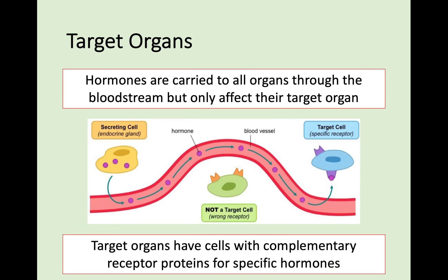Hormones are carried to all organs through the bloodstream, but they would only affect their target organ — something that should remind you a little bit of how enzymes work in terms of being specific. Target organs have cells with complementary receptor proteins, meaning they can only fit with the specific hormone. So if you have a secreting cell like an endocrine gland releasing a hormone into the bloodstream, it will pass over target cells waiting for another type of hormone and won't match. It will find the correct target cells on the target organ and react with those to produce some sort of response.